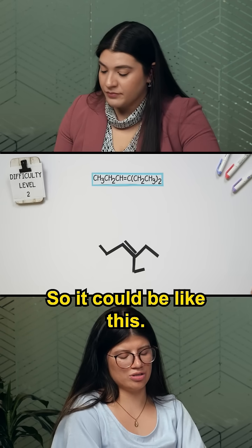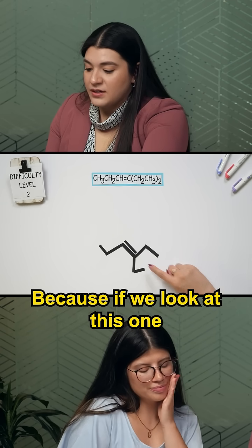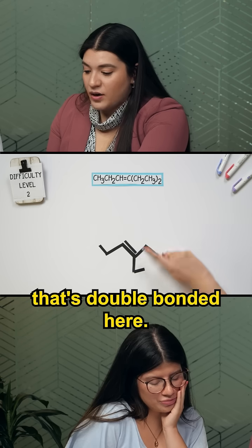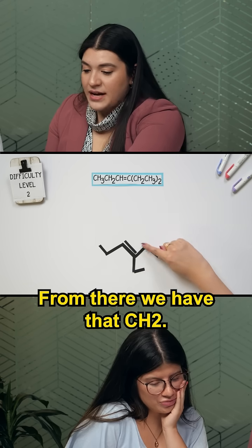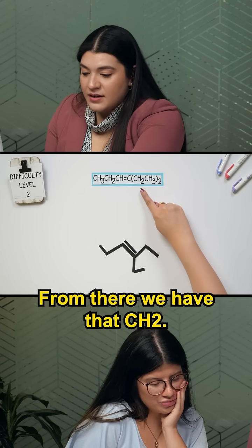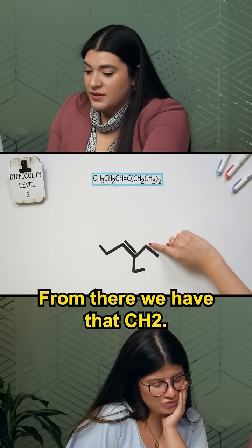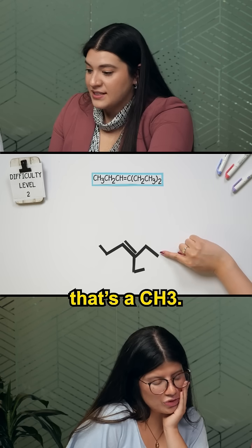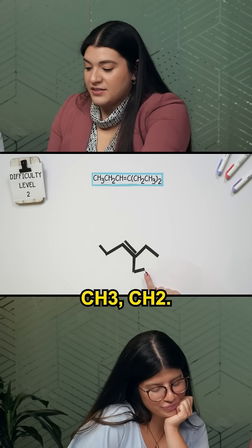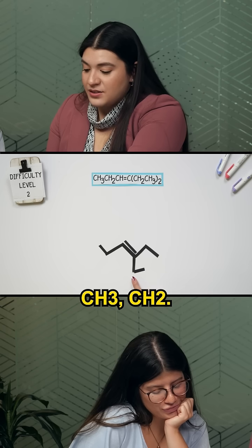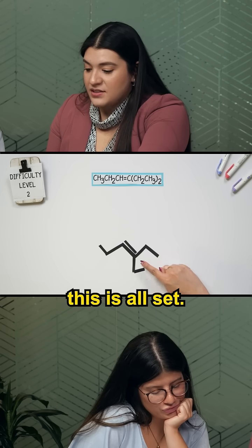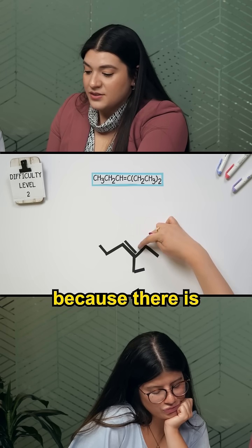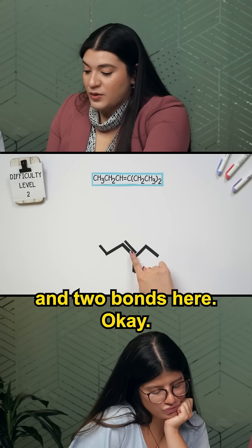So I could do like this. If we look at this one, that's the carbon that's double bonded here. From there we have that CH2, and this is sticking out — that's at the end, that's a CH3. Same thing here: CH3, CH2. And I know that this is all set — it only has a carbon because there's a double bond and two bonds here.